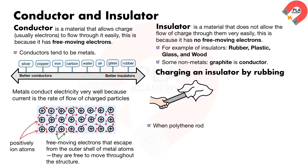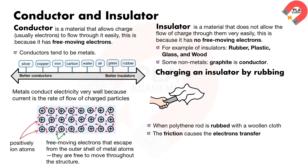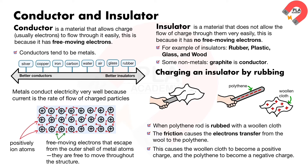Charging an insulator by rubbing. When a polythene rod is rubbed with a woolen cloth, the friction causes electrons to transfer from the wool to the polythene. This causes the woolen cloth to become positively charged and the polythene to become negatively charged.